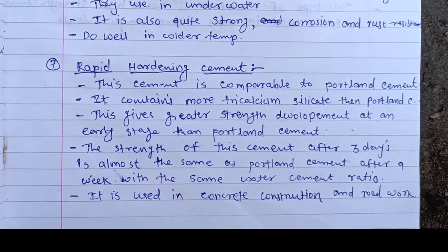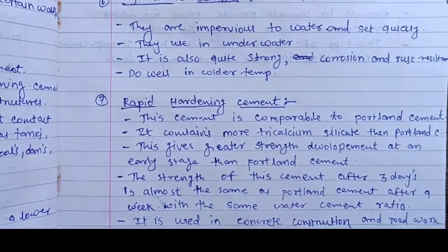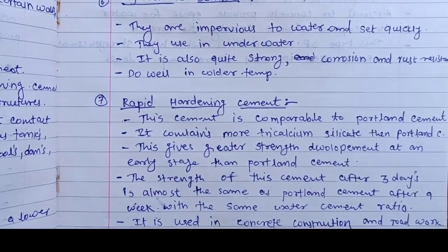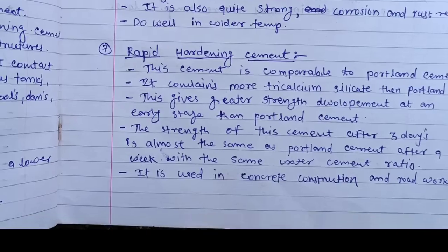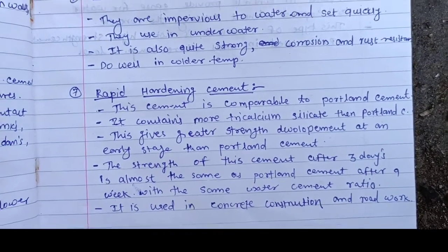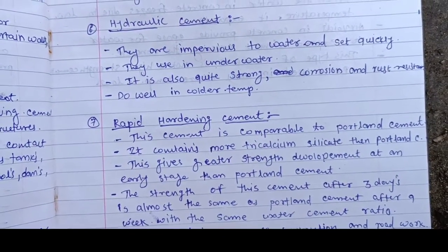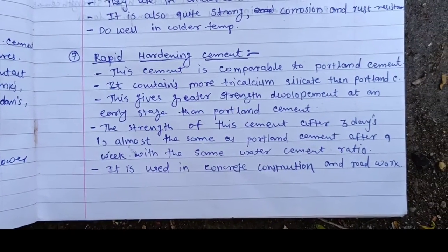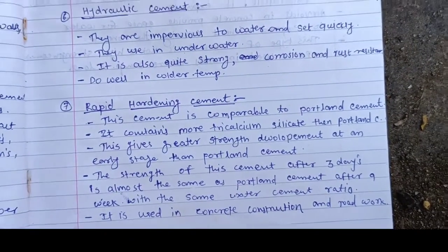The seventh type is rapid hardening cement. Compared to Portland cement, it contains more tricalcium silicate, which gives greater strength development at an early stage. The strength of this cement after three days is almost the same as Portland cement after one week, with the same water-cement ratio. It is used in concrete construction and road work.